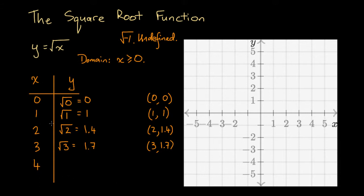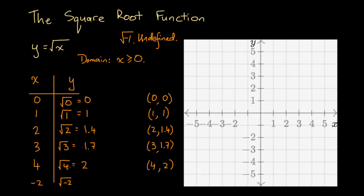At x equals 4, y equals the square root of 4. Since 2 times 2 equals 4, the square root of 4 is simply 2, giving us the point (4, 2). Note that if we tried substituting a negative value like x equals minus 2, we'd get the square root of minus 2, which is undefined — confirming that minus 2 is not part of the domain. Thankfully we established that at the beginning.